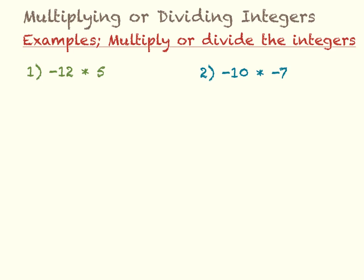So there is one negative sign, and we're multiplying or dividing. So that means that if there's an odd number of negative signs, which there is, then the answer is going to be negative. So we know we're going to have a negative answer. And then we just take 12 times 5.